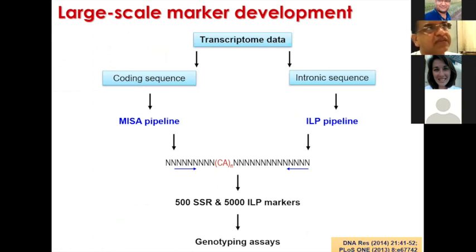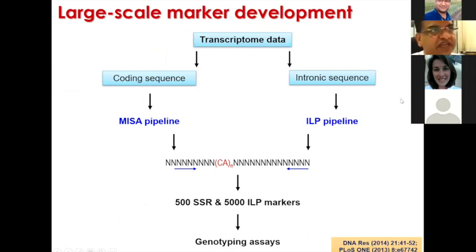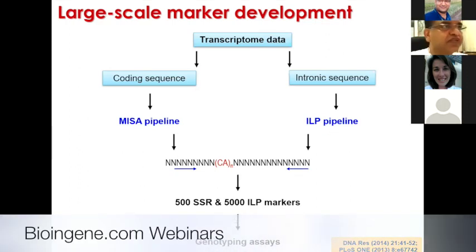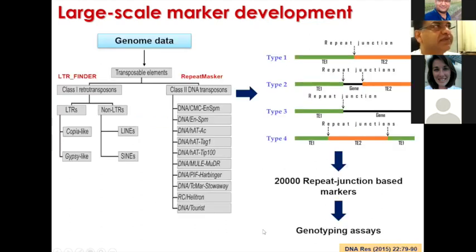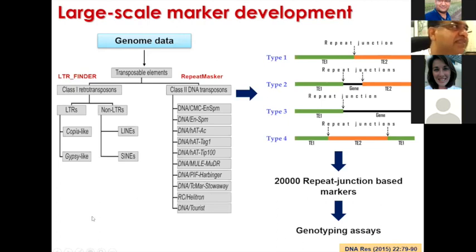Coming to large-scale marker development based on the 2012 Foxtail millet genome sequence, we used transcription data to identify coding sequences and intronic regions. From intronic regions, we identified intron-length polymorphic markers. More than 5,000 ILP markers were developed for coding sequences. Using the MISA bioinformatic pipeline to identify microsatellite markers, we identified 500 SSR markers. For transposable element-based markers, we developed over 20,000 LTR-based markers, including classes such as copia, gypsy, LINE, SINE, and Class II transposable elements.